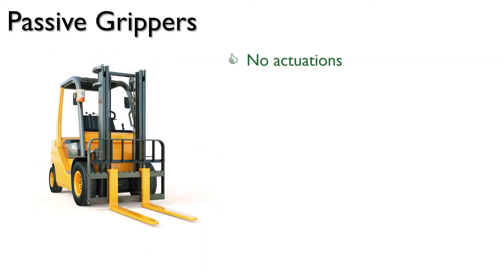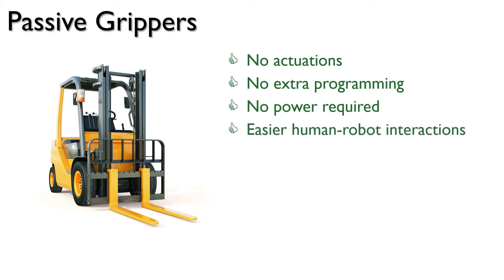Passive grippers have no actuation and rely on robot arms for their movement. In robotics, passive grippers have been gaining interest because they don't require extra planning, they don't require continuous power to maintain their state, they allow easier human interactions with the robot, and they reduce system complexity and deployment cost.